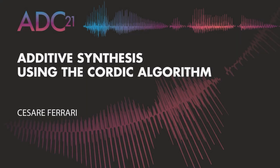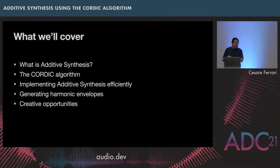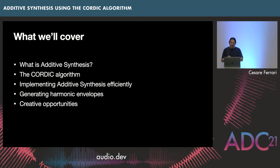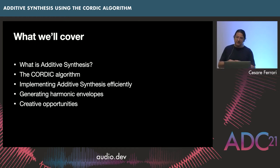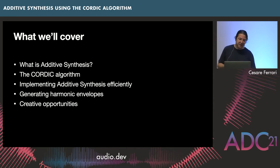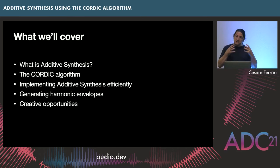So what am I going to cover? First off, what is additive synthesis? I'm going to head off on a tangent and talk about the CORDIC algorithm, which is a wonderful technique from the 1950s, related to how you can make an additive synthesizer reasonably efficiently. Then we'll talk about harmonic generation — giving the engine envelopes for the various harmonics — and think through the creative opportunities that approach offers over subtractive or sample-based instruments.